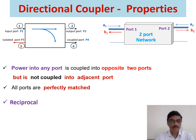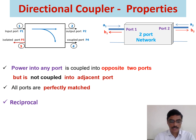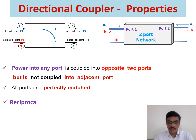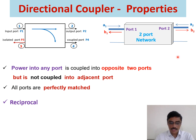The third property is reciprocal, which also means reversing the ports. For a network to be reciprocal, the input and output ports must be interchangeable. Another way of explaining this reciprocal property is that the transmission of a signal between any 2 ports does not depend on the direction of propagation of the signal. It also exhibits the symmetric property, that means S equals S transpose.